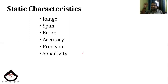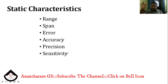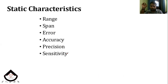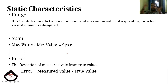Now let's discuss static characteristics. These include: range, span, error, accuracy, precision, and sensitivity. First one is range — the difference between the minimum and maximum value of a quantity for which an instrument is designed. That means range is the operating limits of the instrument.